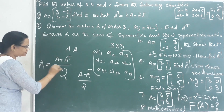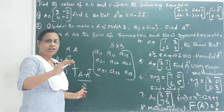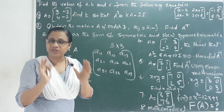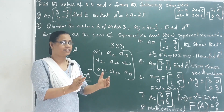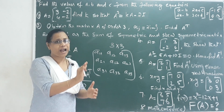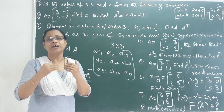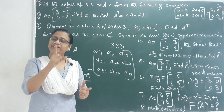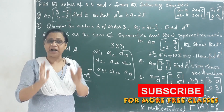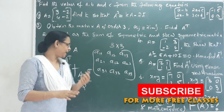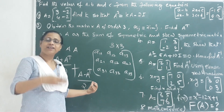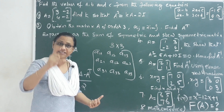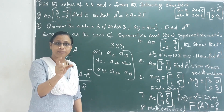We construct these matrices. The symmetric matrix uses (A plus A transpose) by 2 and the skew-symmetric matrix uses (A minus A transpose) by 2. If a matrix is not square, it cannot be symmetric. That is one more important point for this question.